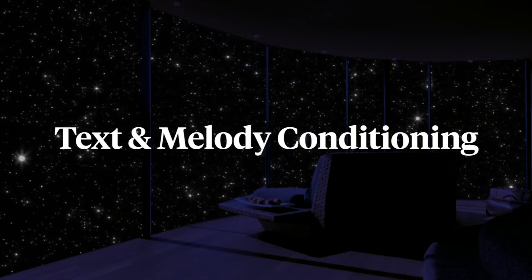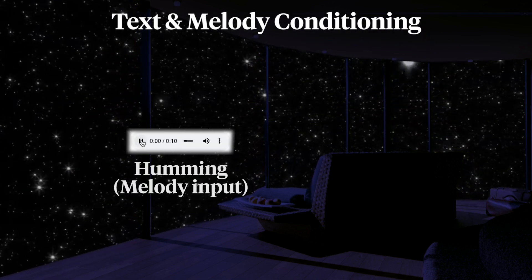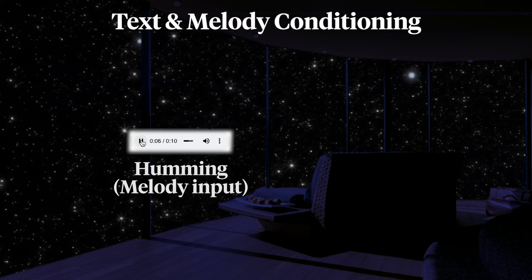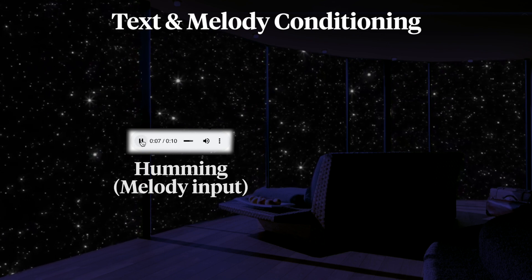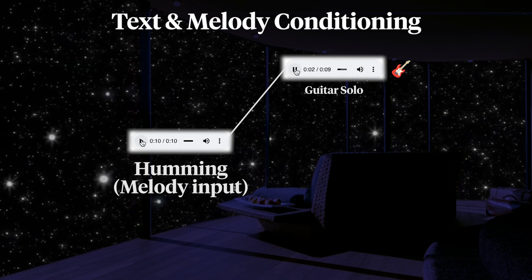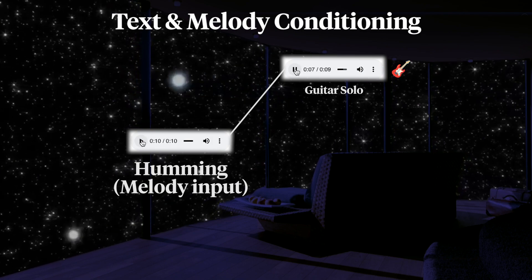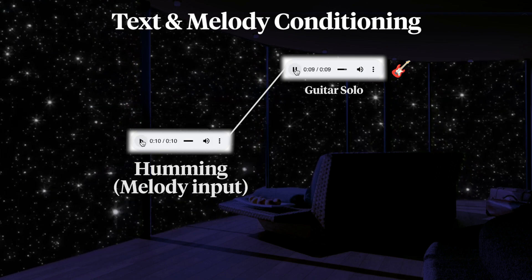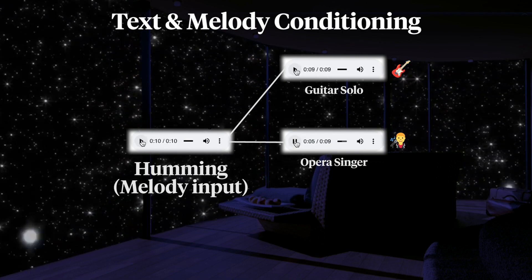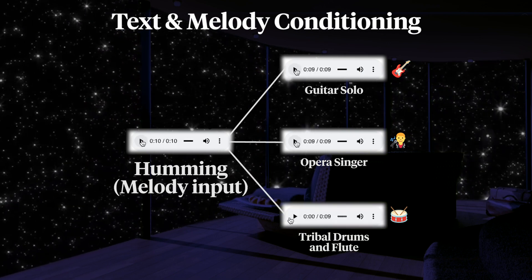Then there's text and melody conditioning. Music LM can take a melody prompt such as Bella Ciao humming and use it as a basis for the text prompt. For example: guitar solo, or opera singer, or tribal drums and flute.